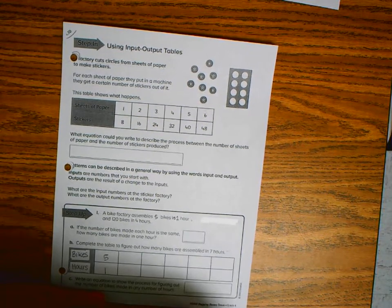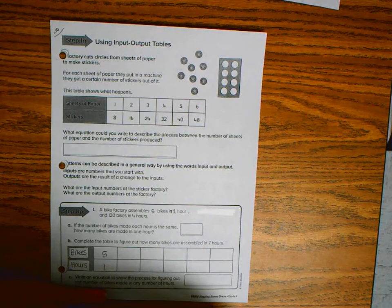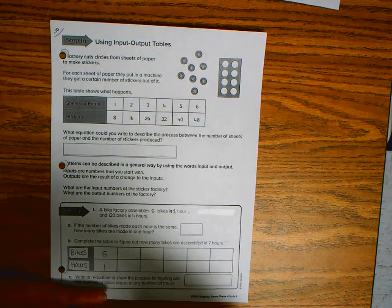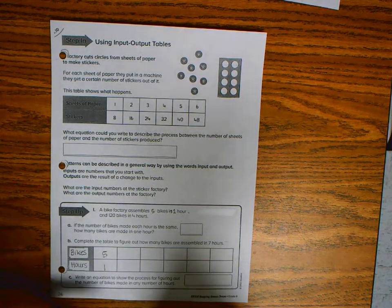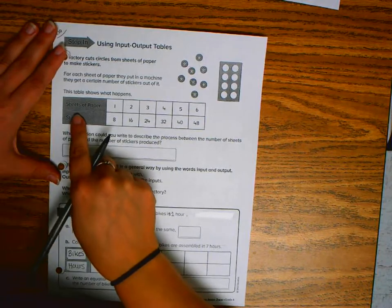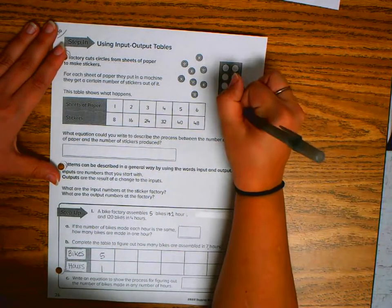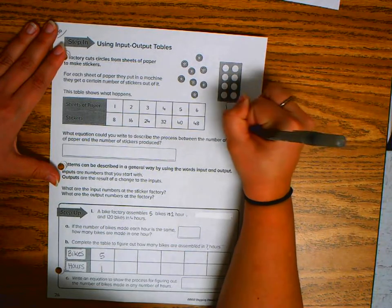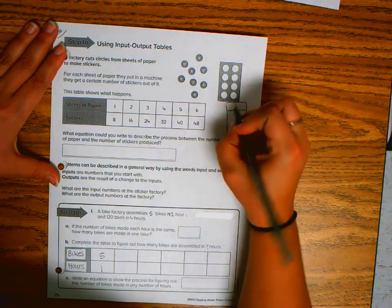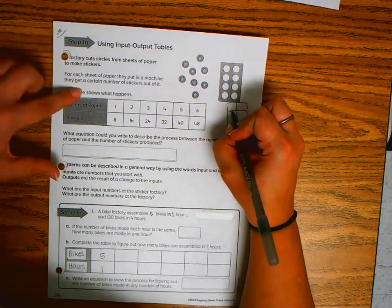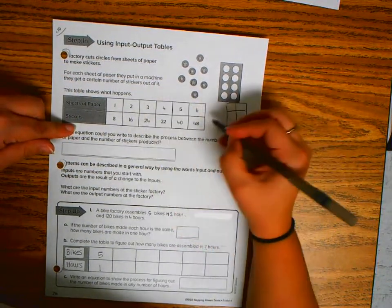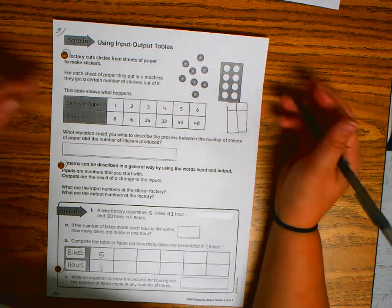Today we will be working on how to find the rule or numerical expression for an input-output table. Your input is always the first row or column, and the second row or column is your output.